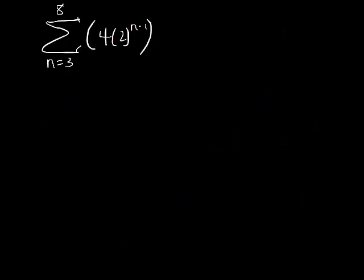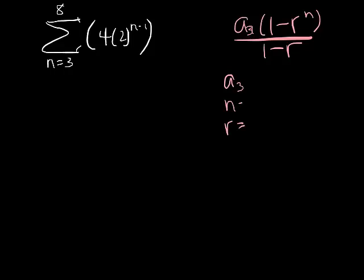Alright, so here's my finite geometric series. My formula is a sub 1 times 1 minus r to the n all over 1 minus r. Now in this case, that's really a sub 3. So let's see, I need three things: I need a sub 3, I need n, and I need r. Well, if I want a sub 3, I'll just replace n with 3, and that will give me 16.